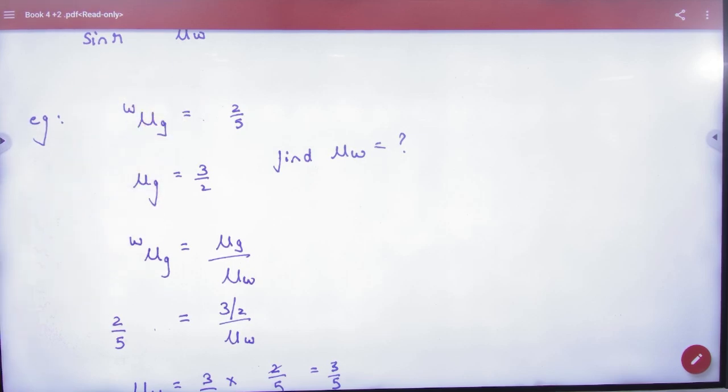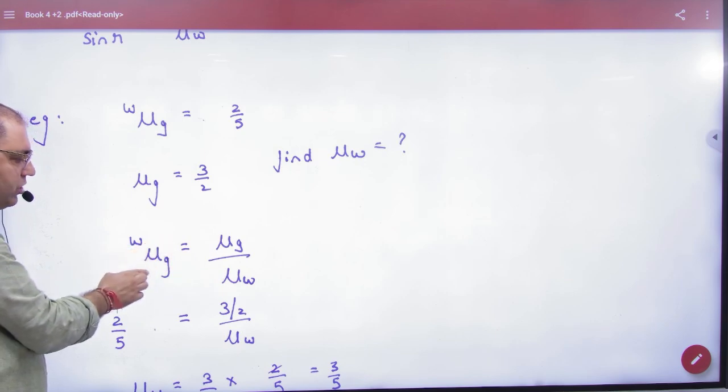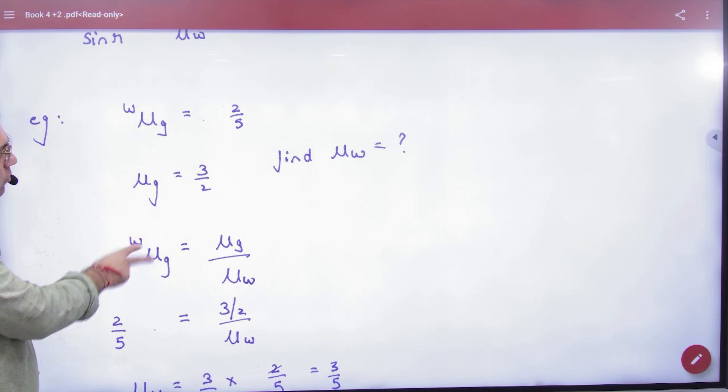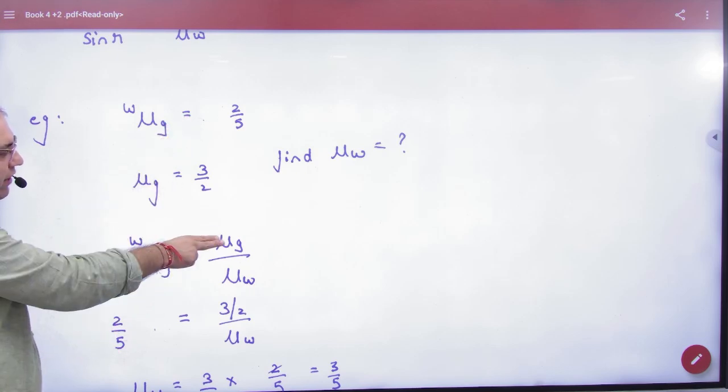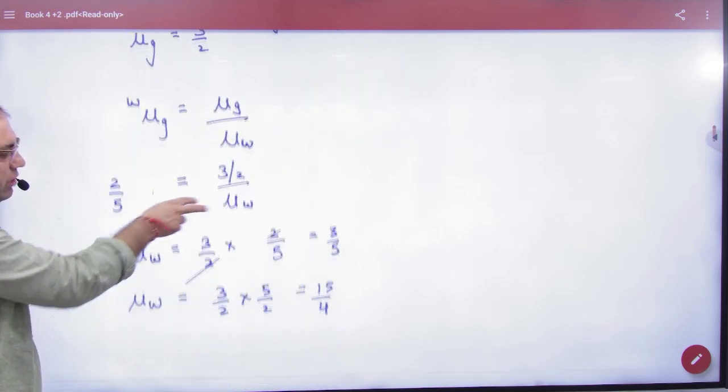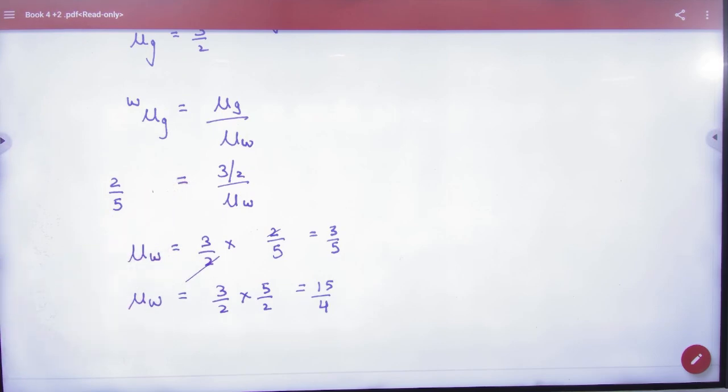Given 2 by 5, you have the refractive index of glass and need to find water. Break it: μ water equals μ glass by μ water. Water is on top so it goes to the bottom, glass is on bottom so it comes to the top. This value is given as 2 by 5, this value is given as 3 by 2. Cross multiply to calculate μ of water. So that's how Snell's law works, clear?